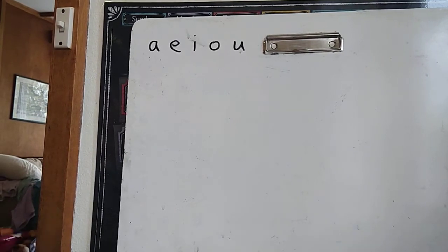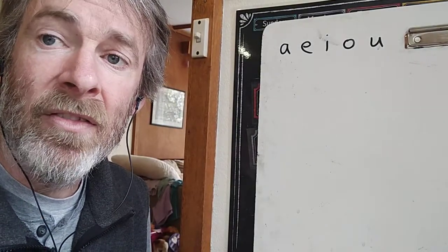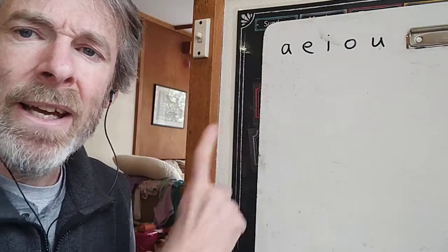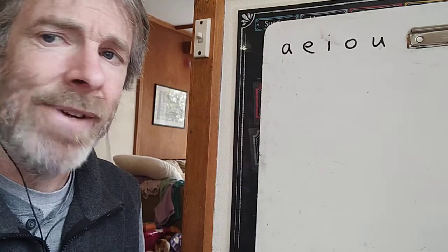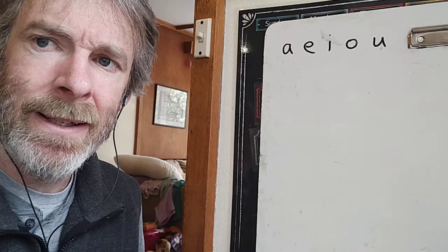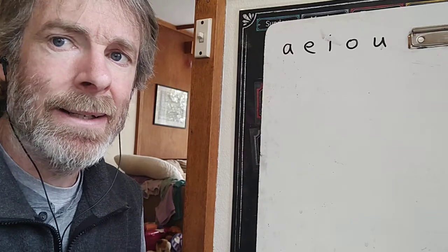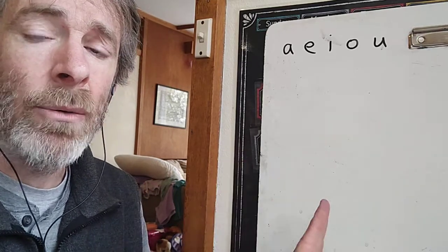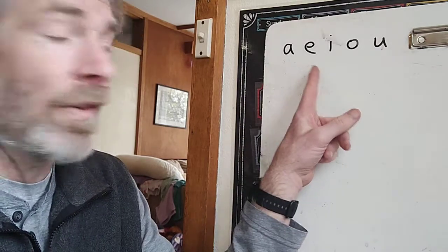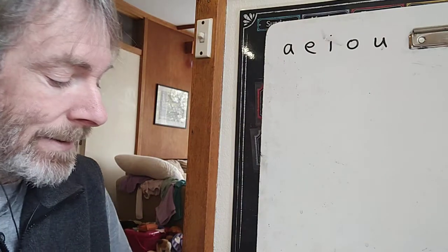What letter does the word 'vowel' start with? V. Starts with a V. Is V a vowel? Nope. A V is a consonant. Can you say 'consonant'? Consonant. So we have vowels and consonants. These are the five vowels. All the other letters are consonants.